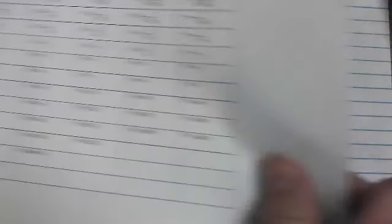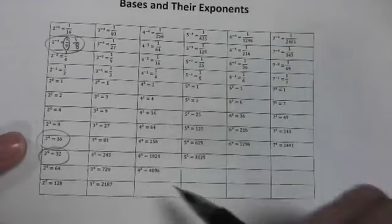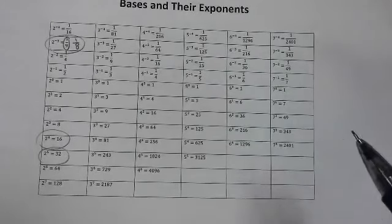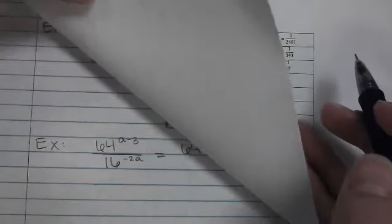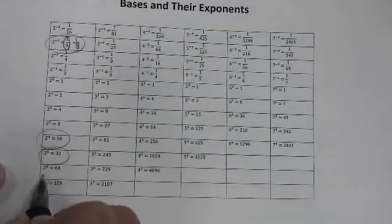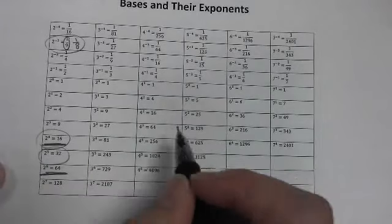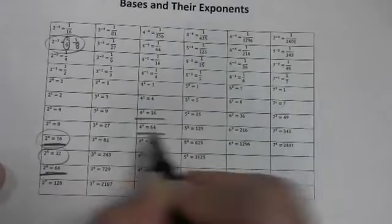So again, I'm looking at my sheet that has all of the bases with their exponents. And I'm looking for a column that has 16 and 64 in the same column. And you can have 2s right here, so 16 and 64.